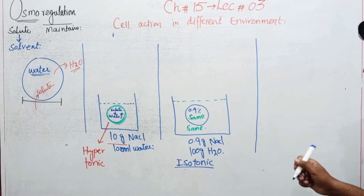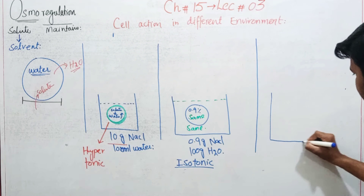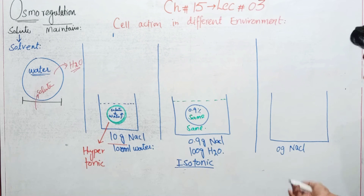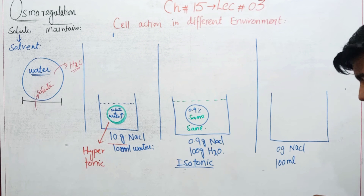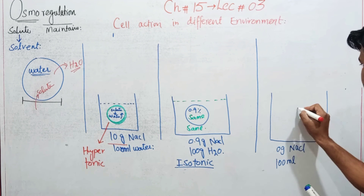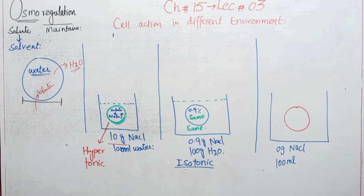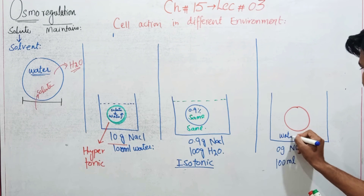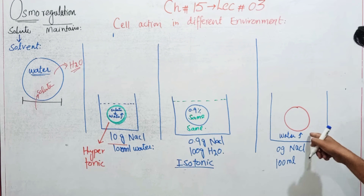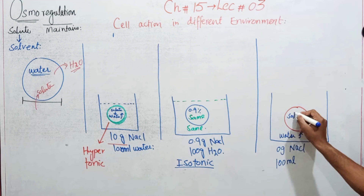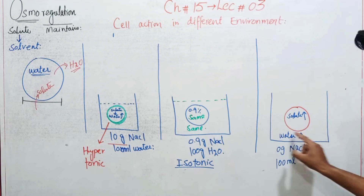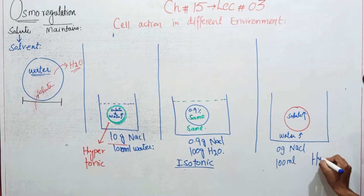تیسرا ہے hypotonic environment۔ اسی طرح سے بیکر لیا اور اس بیکر کے اندر zero gram NaCl ڈالا - یعنی کہ آپ کے پاس 100 ml pure water ہے۔ اب اس بیکر کے اندر cell کو ڈال دیا۔ یاد رکھیں اس کے باہر water کی concentration زیادہ ہے، solute کم ہے۔ Cell کے اندر solute کی concentration زیادہ ہے، باہر water کی concentration زیادہ ہے۔ تو یہ جو condition کہلائے گی یہ hypotonic کہلائے گی۔